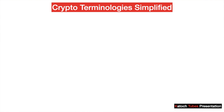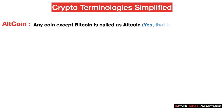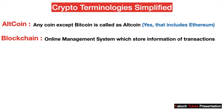The first jargon that is very common in the crypto world is altcoin. Any coin which is not Bitcoin is termed as altcoin. Number two: blockchain. Blockchain is an online management system which stores information of transactions in its network.